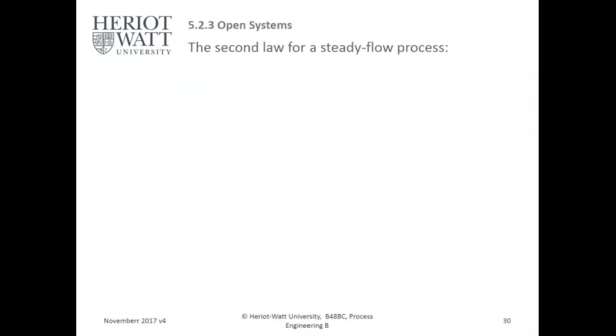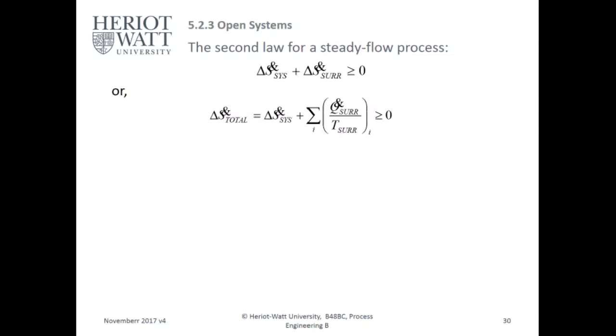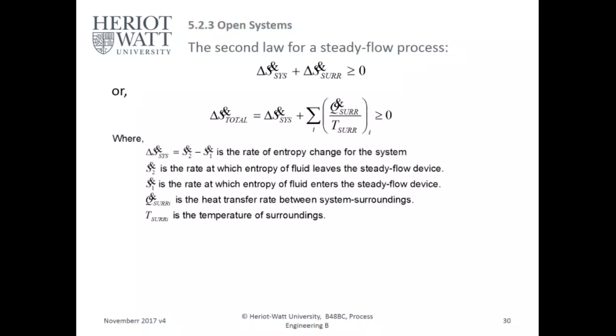Moving on to open systems — the second law for a steady flow process. We start with: the change in entropy of the system plus the change in entropy of the surroundings is greater than or equal to zero. The total entropy equals the entropy of the system plus the summation of heat transfer with the surroundings divided by the temperature of the surroundings.